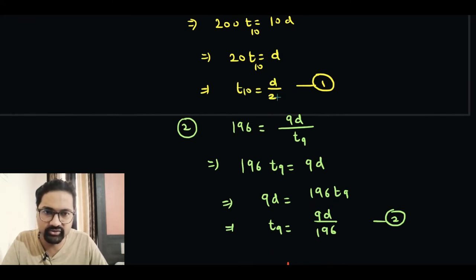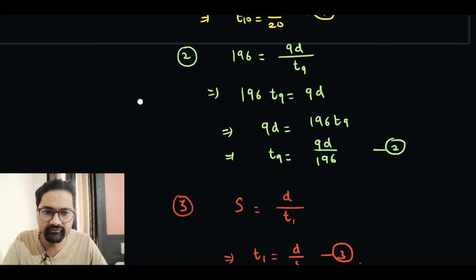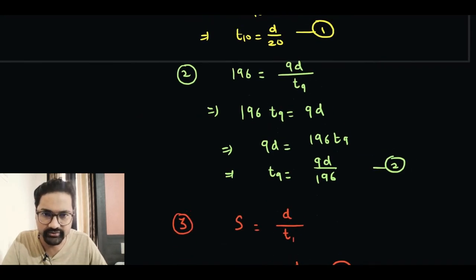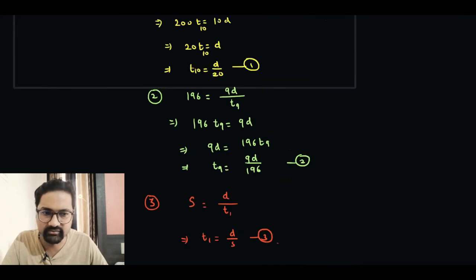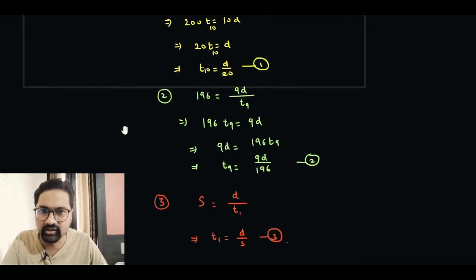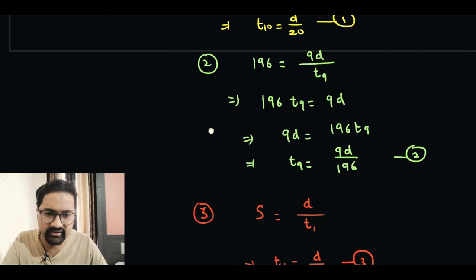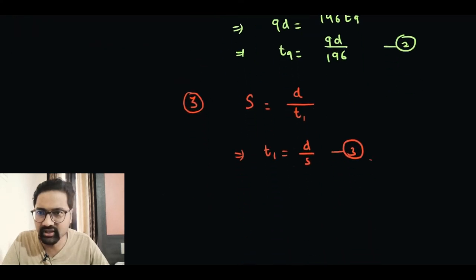From the first, second, and third equations, I can easily relate all the times because I know that the time taken for the first 10 laps is actually equal to the time taken for the first nine laps plus time taken for that last lap.